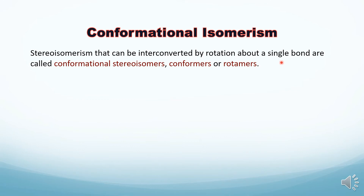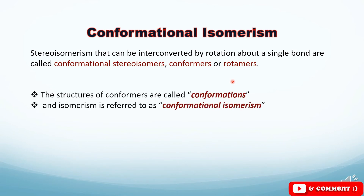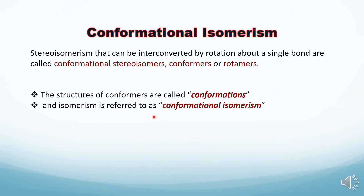We can get hundreds or even thousands of these conformers. Because conformational interconversion requires only a little amount of energy, these conformers are readily interconvertible. The structures of these conformers are called conformations, and hence this isomerism is referred to as conformational isomerism.